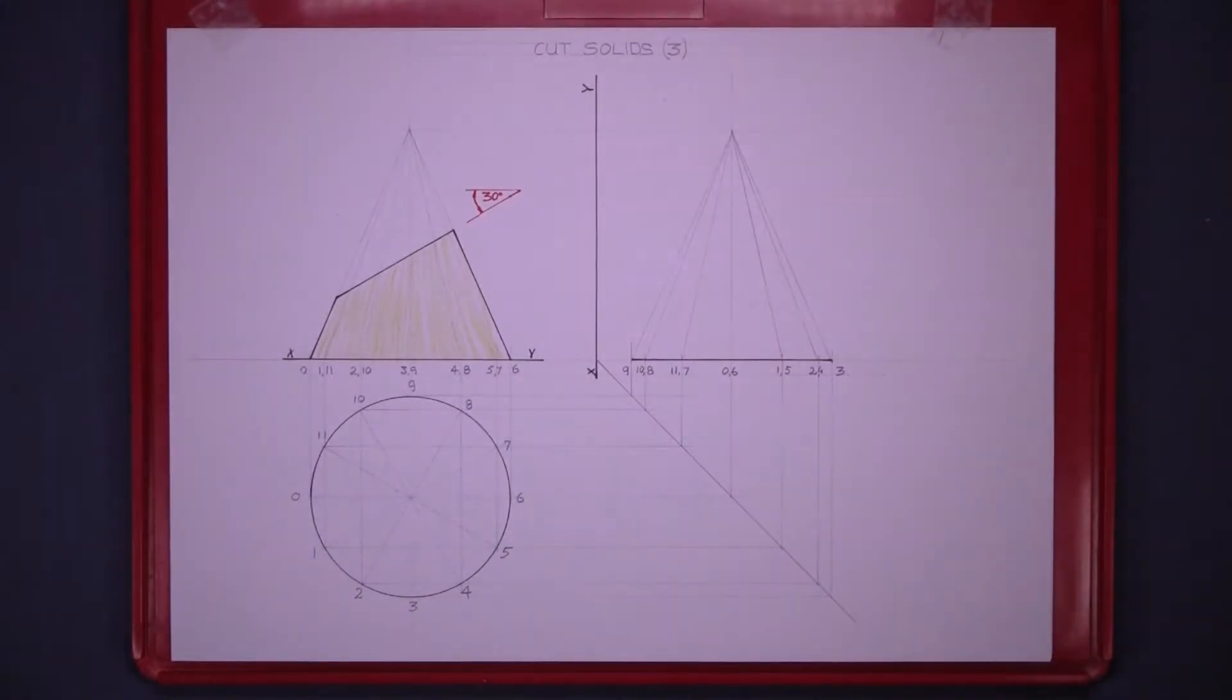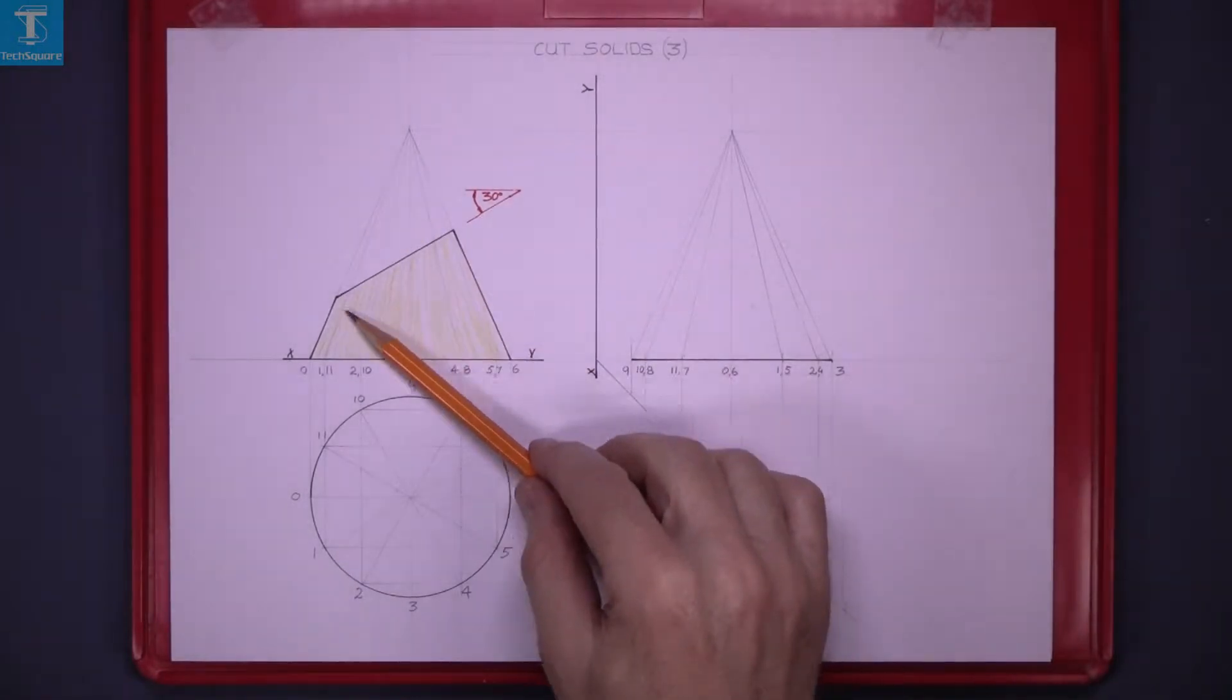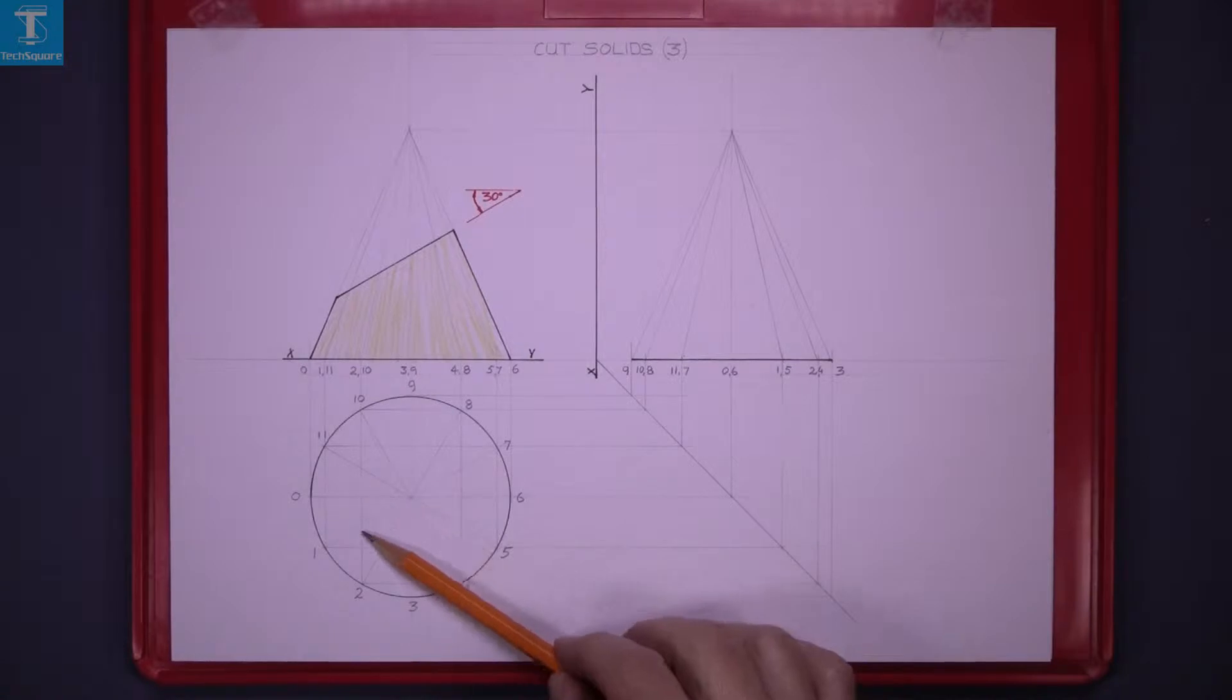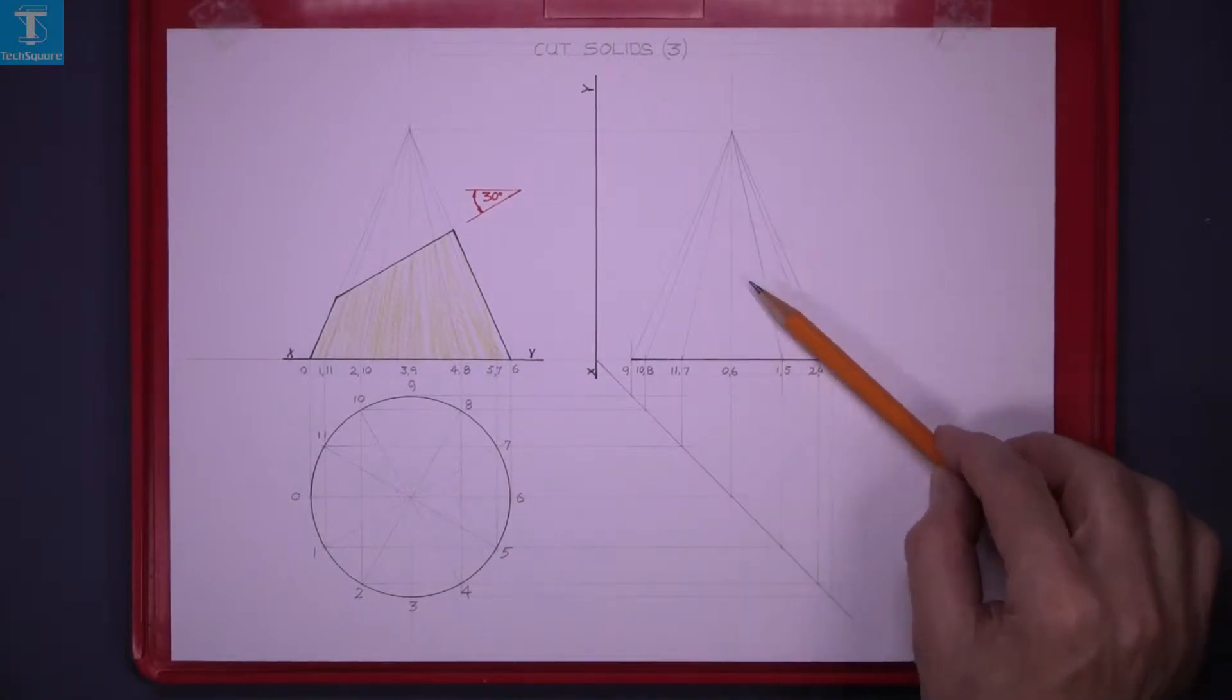Cut solids three. We're given the elevation of a truncated cone and the unfinished plan and the unfinished end view. We're asked to find the cut in the plan and the end view.